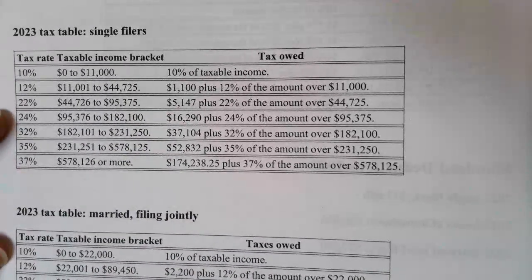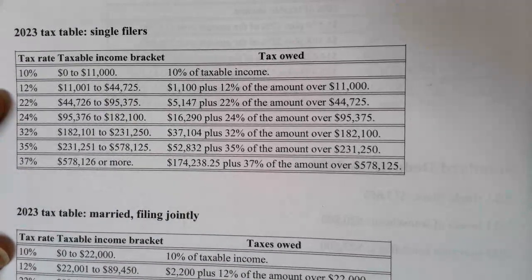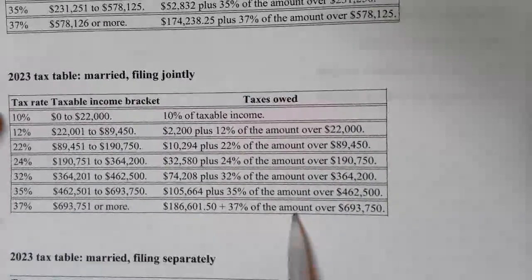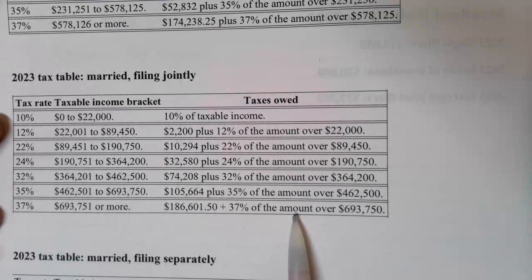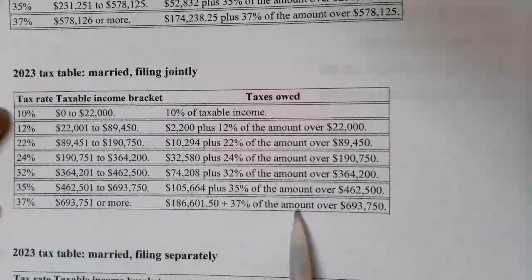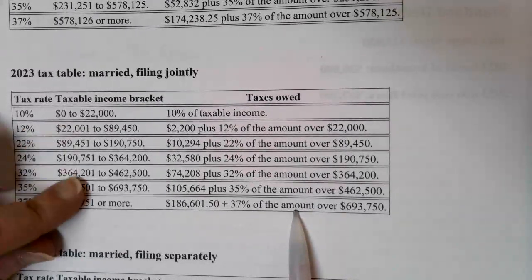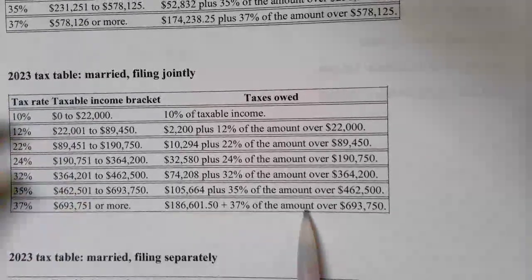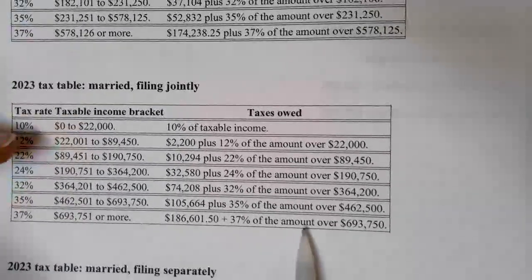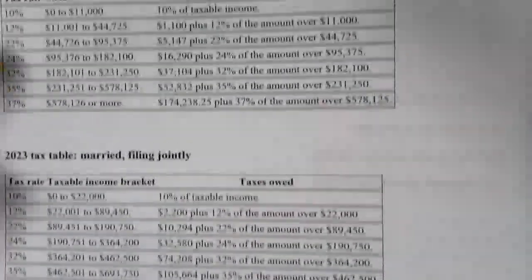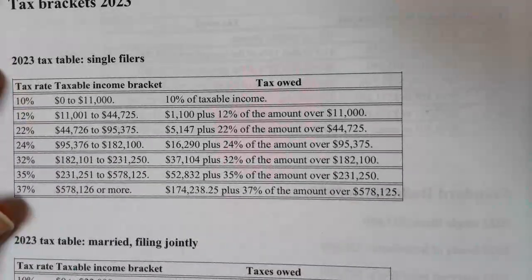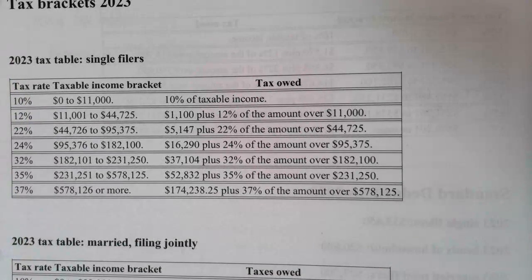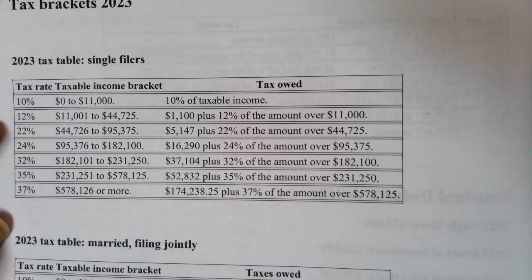I'm going to be focusing in this video on single filers, but notice that there is its own table if you are married filing jointly and the amounts are different. But the process of how you use the table is the same. There's a single filing, a married filing jointly, married filing separately, as well as a head of household table. So make sure you choose the right table when you're trying to do your tax calculations.